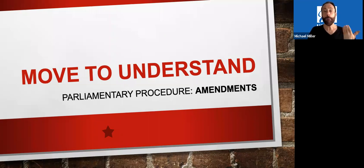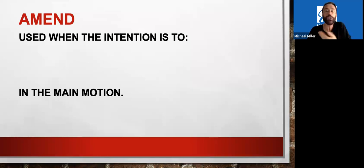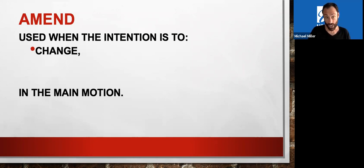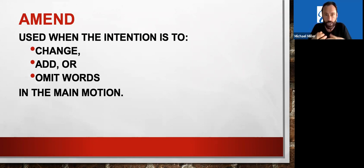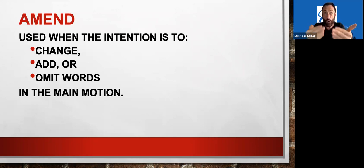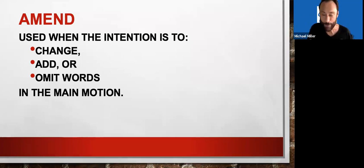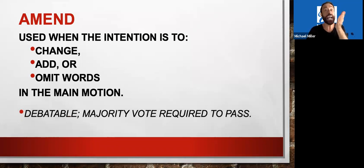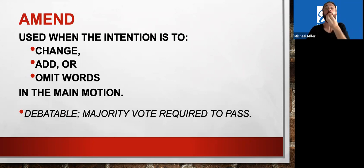Let's talk about a motion to amend. Why would you want to amend a motion? Well, it's used when you want to change the motion that's on the floor or add or omit words — you want to make the motion better in some way or another. Keep in mind, what this means is there's a main motion on the floor, and you're making a motion on that motion. In other words, you're moving to amend it. So just like any other motion, it requires debate, and a majority of the members have to vote yes to change it.